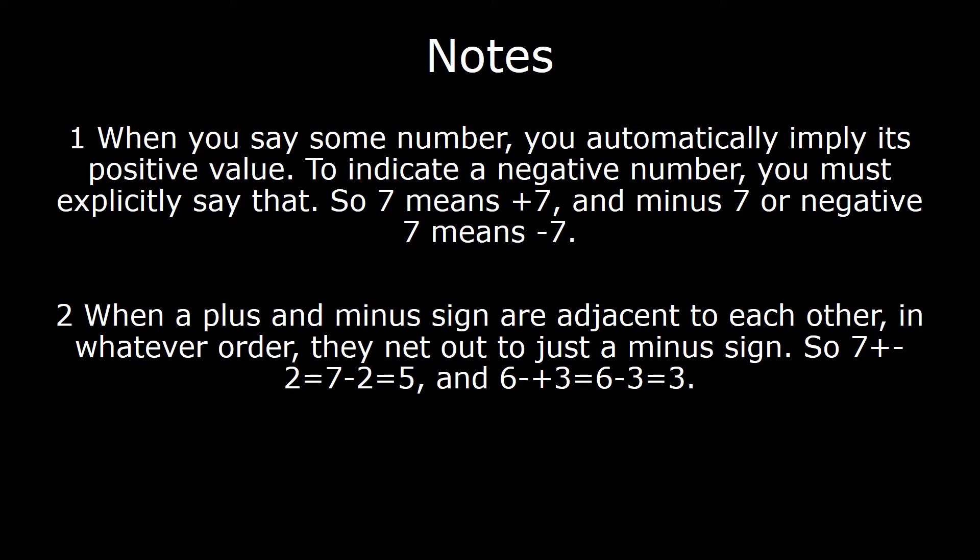Secondly, when you have a plus and a minus sign adjacent to each other, whether it is a plus followed by a minus or a minus followed by a plus, you can actually just ignore the plus sign and only treat it as a negative sign. Why is this the case? If you have 7 plus minus 2, then you're adding a negative number to 7. So 7 plus minus 2 becomes 5, which is the same as 7 minus 2.